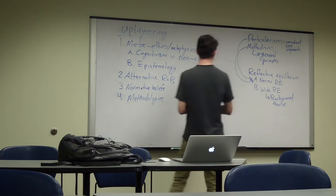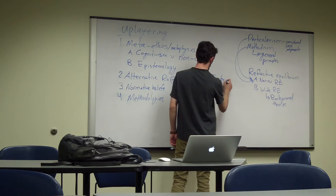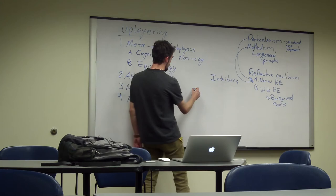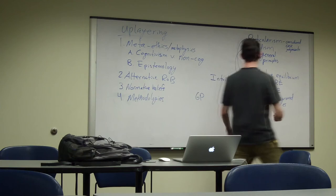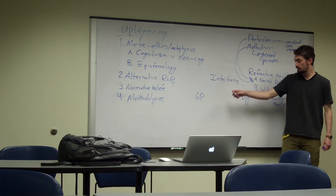So, in this sense, reflective equilibrium basically says this. We have considered case judgments or intuitions about cases, right? Then we have general principles, which I'll also abbreviate as GP on here. And then we have background theories, which I'll abbreviate as BT. And reflective equilibrium says we need to find a theory, right, an ethical theory that best coheres these three things together.